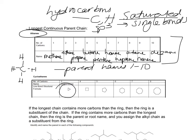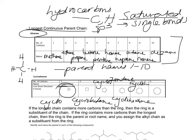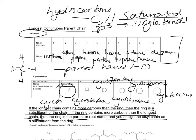When we have a ring, we add cyclo- in front of the parent chain name. So here we have cyclopropane with three carbons, then cyclobutane, cyclopentane with five carbons, cyclohexane with six, cycloheptane for seven, and cyclooctane for eight. If the longest continuous chain contains more carbons than the ring, then the ring is a substituent on the chain. If the ring contains more carbons than the longest chain, then the ring is the parent and you assign the alkyl chain as a substituent.